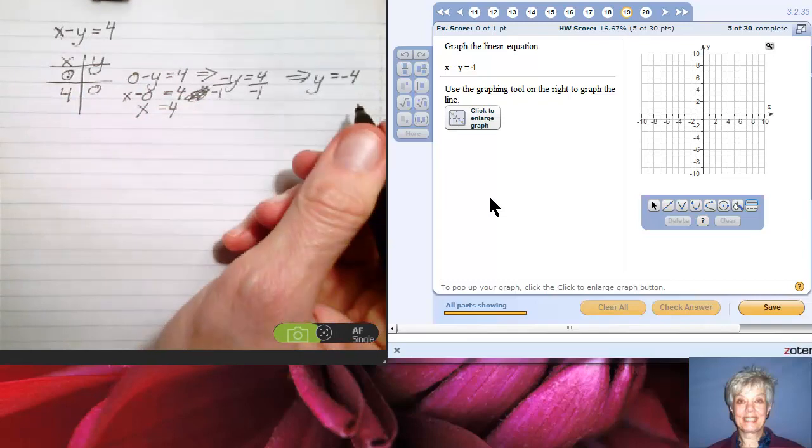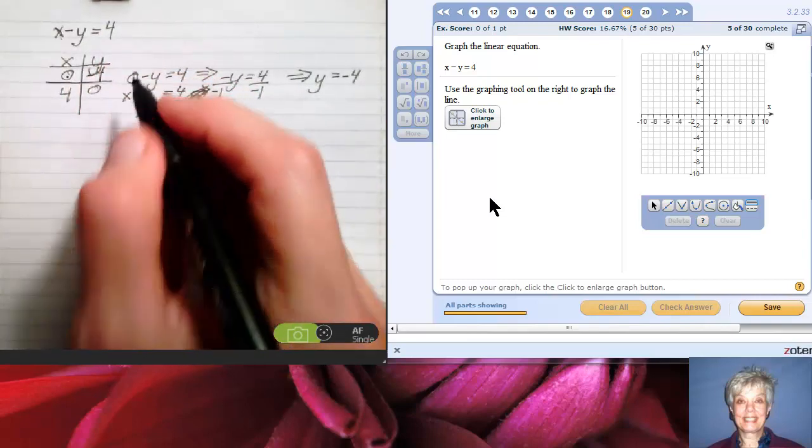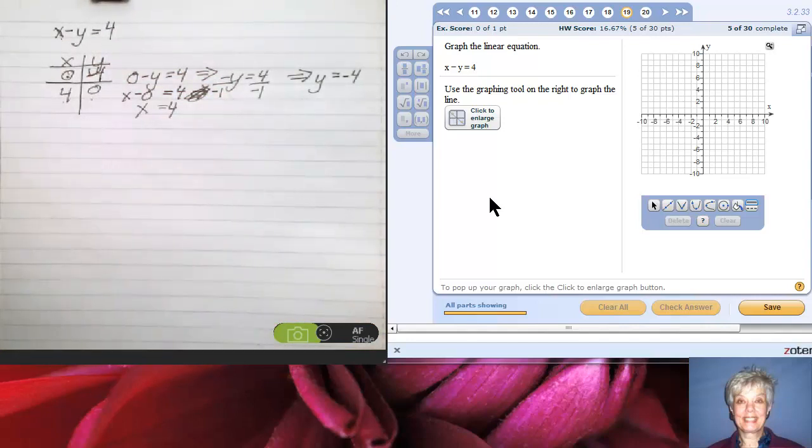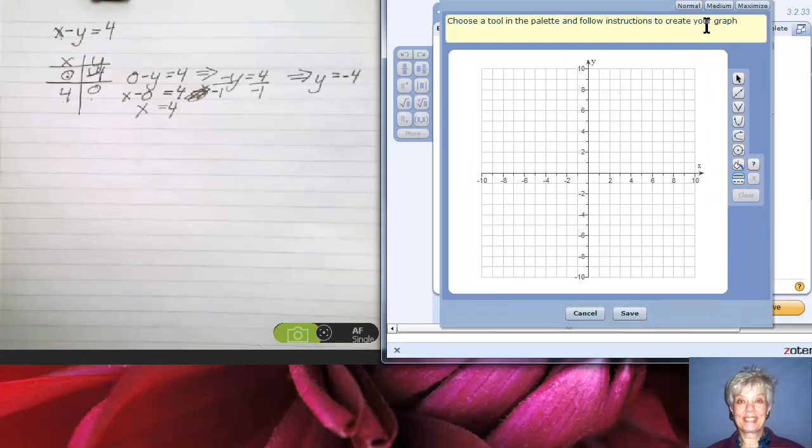Now I have two points: the point (0, -4) and the point (4, 0). I'm going to graph them. I'm going to come over here. I'm going to increase the size of the graph so I can see better. And I'm going to find the point (0, -4).